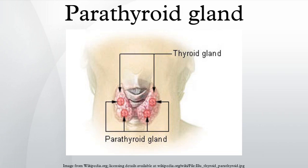Parathyroid hormone was isolated in 1923 by Adolf M. Hanson and in 1925 by James B. Collip. Studies of parathyroid hormone levels by Roger Guillemin, Andrew Schally, and Rosalyn Sussman-Yalow led to the development of immunoassays capable of measuring body substances and a Nobel Prize in 1977.